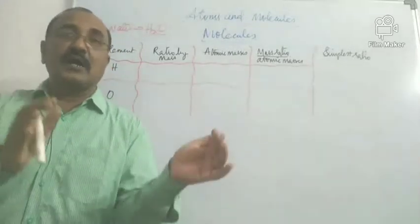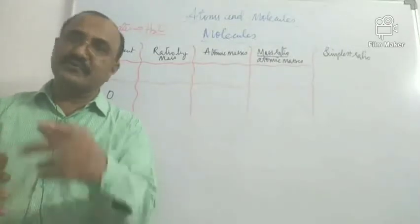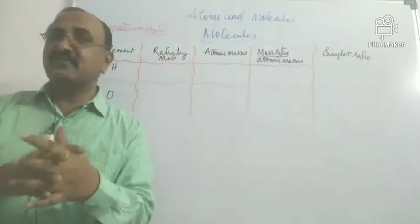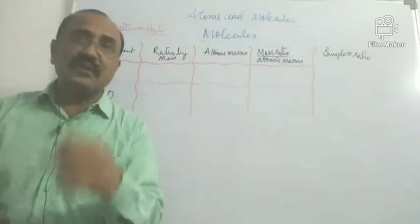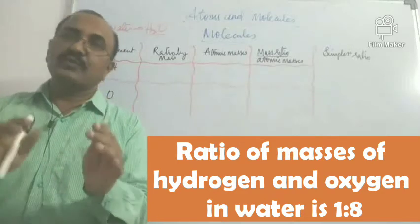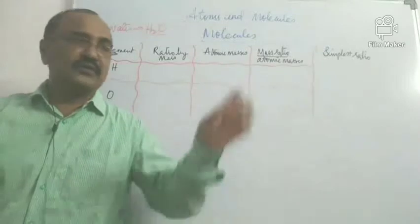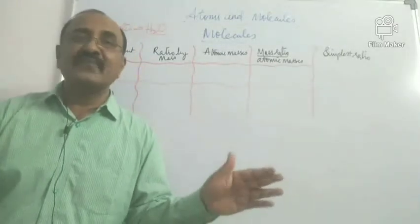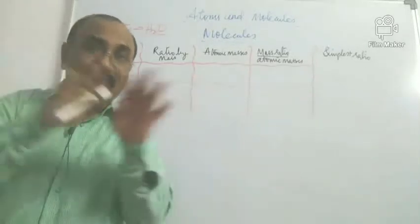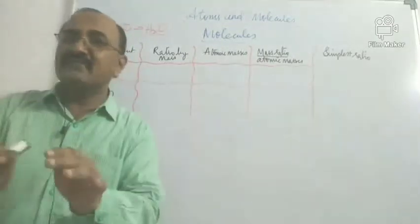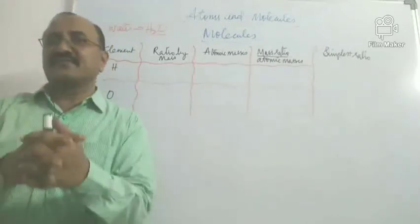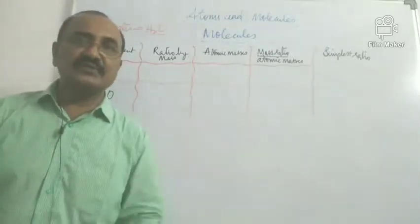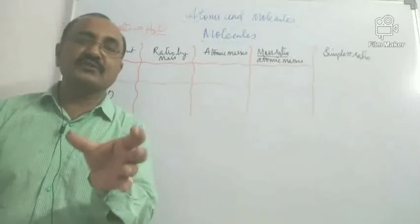So hydrogen and oxygen, when they combine, always combine in the ratio of 1 to 8 by mass. In every 9 grams, 1 gram of hydrogen and 8 grams of oxygen would be there. If you give 1 gram of hydrogen and 8 grams of oxygen, they'll combine. If you give 1 gram of hydrogen and 10 grams of oxygen, only 1 gram of hydrogen will react with 8 grams — that is the ratio they are maintaining. This means the atoms in them are combined in a definite ratio, which causes the definite mass ratio in the compound. That is what we will use to find the atomic composition of the molecule of water.